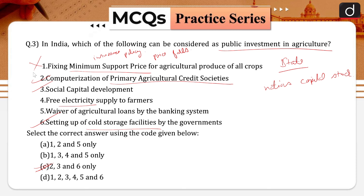Computerization of primary agricultural credit societies will enhance productivity in the agriculture sector as there will be easy and timely access of credit. Therefore, the second statement is correct.